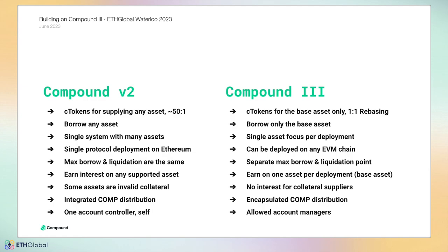The max borrow and liquidation points are the same in V2, so if you borrow the maximum amount allowed by your collateral, you will get liquidated in the next Ethereum block — which has left some users unhappy. Compound V3 has a safer mechanism: the maximum borrow and the liquidation point are separate. If you borrow the maximum amount allowed, you won't get liquidated immediately — there's a 'no new borrows' period in between, giving you time to top off your account or repay before getting liquidated.